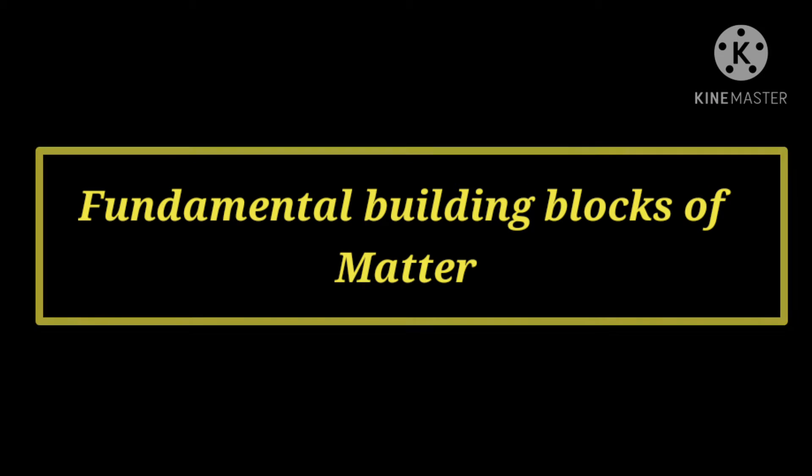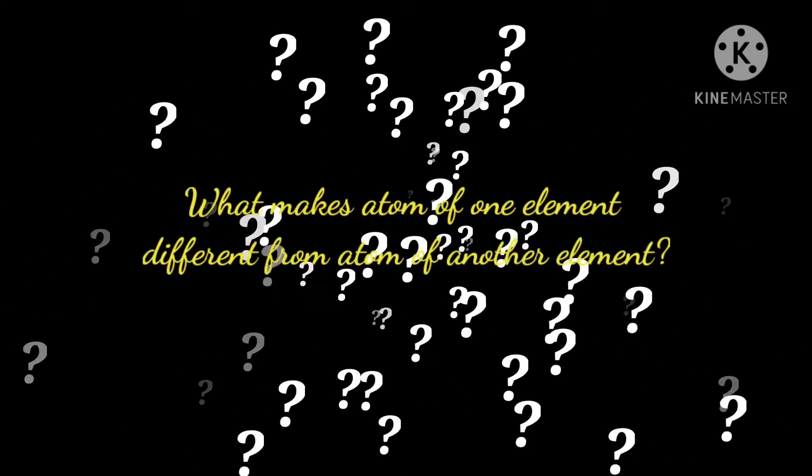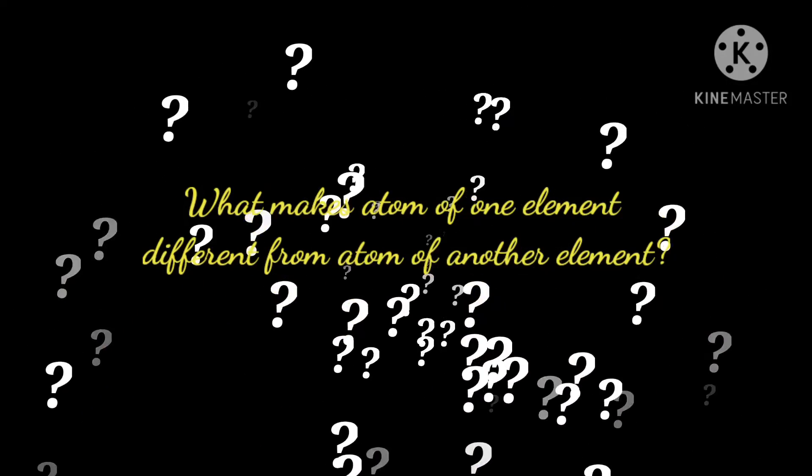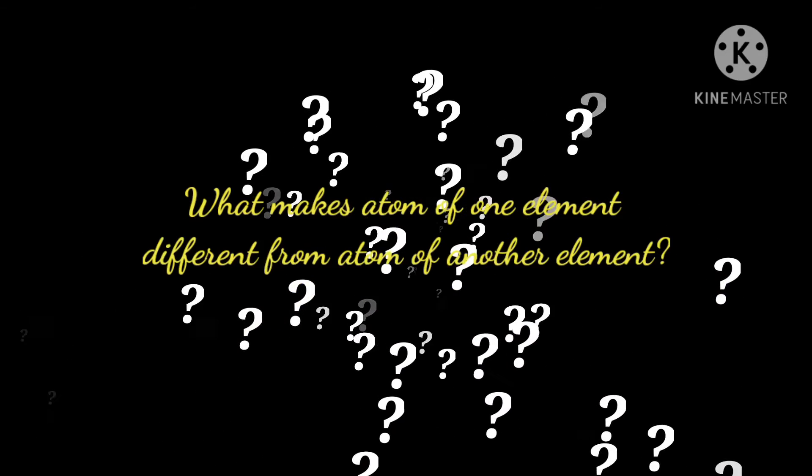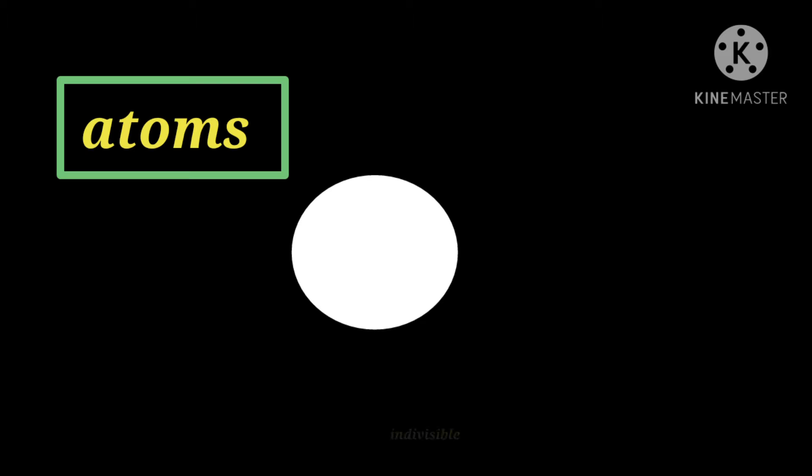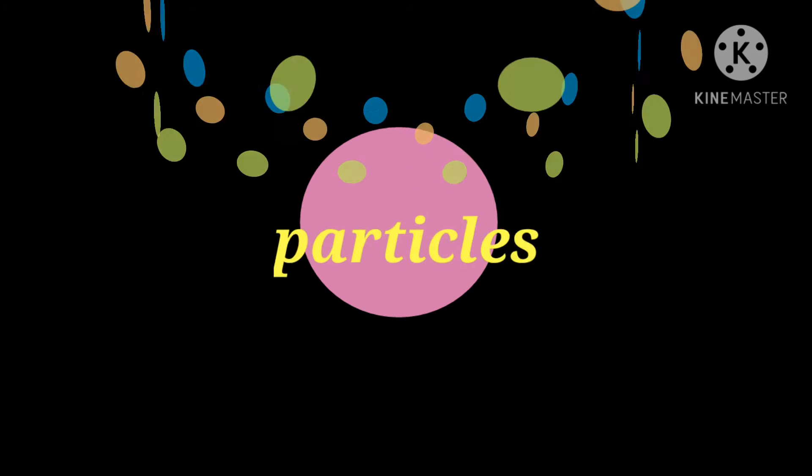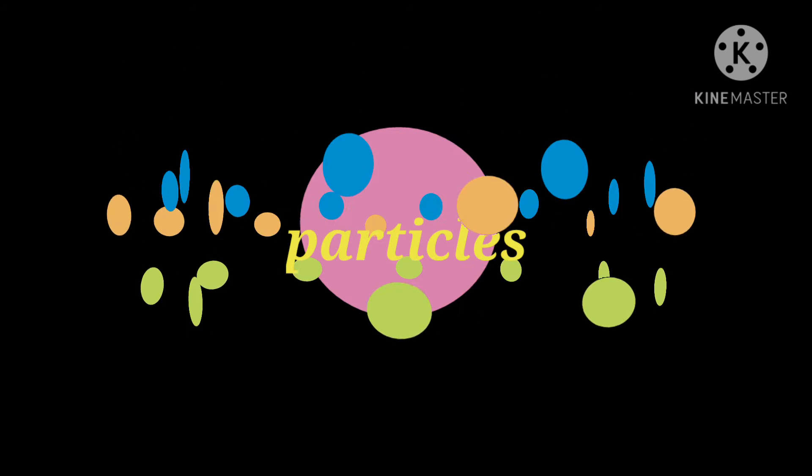The existence of different kinds of matter is due to different atoms constituting them. Various questions arise in our mind, like what makes the atom of one element different from the atom of another element, and are atoms really indivisible as proposed by Dalton, or are there smaller particles inside the atom?